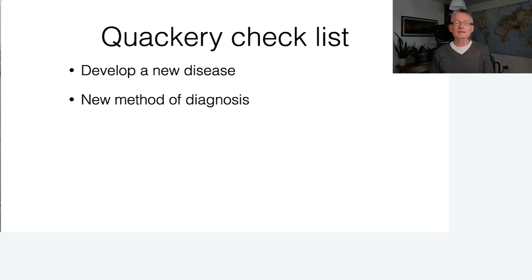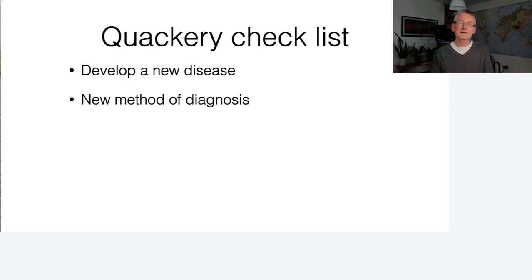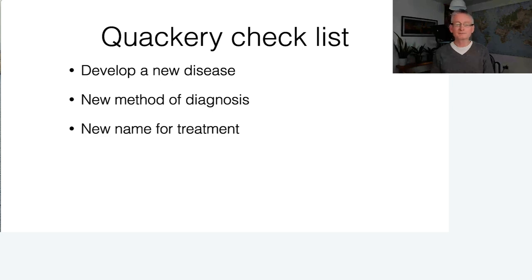Next, develop a new method of diagnosis. There are cephalometric analyses that I and many others cannot understand, used to identify features of a child's face treatable by the new method. With the evolution of cone beam CT, the methods and measurements people can make are almost endless. Then give the treatment a new name — orthotropics, orthodontic breathing physicians — and set up courses for dentists, which is very important to the classic orthodontic quack.